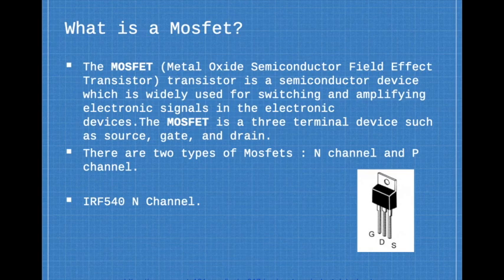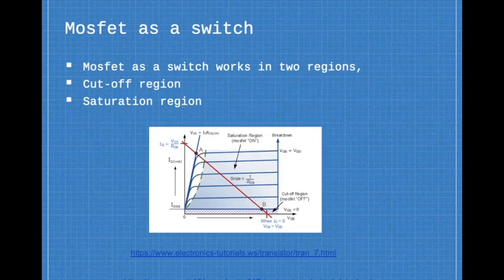The MOSFET is a three terminal device. It has three terminals: the gate, source, and drain. There are two types of MOSFETs: n-channel and p-channel. Here the IRF 540 is an n-channel MOSFET. Now when MOSFET acts as a switch, it works in two different regions: the cutoff region and the saturation region, and you can analyze the graph given here.